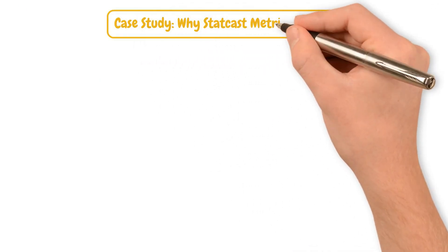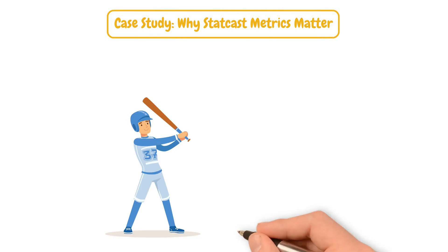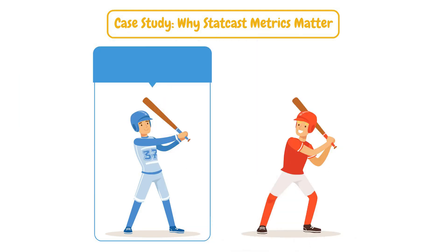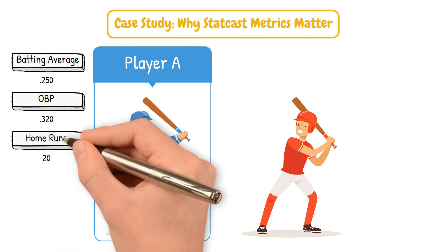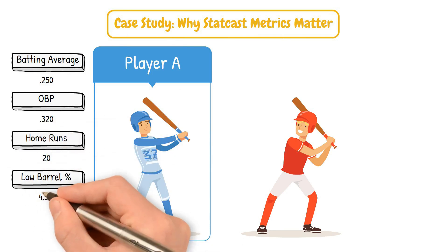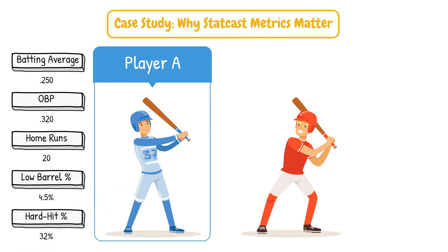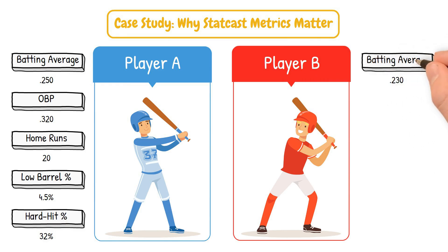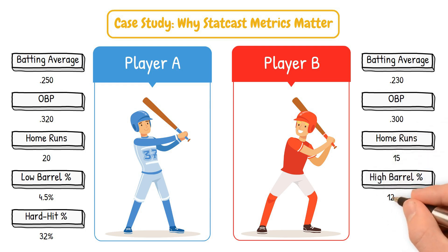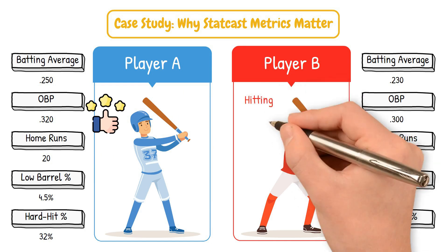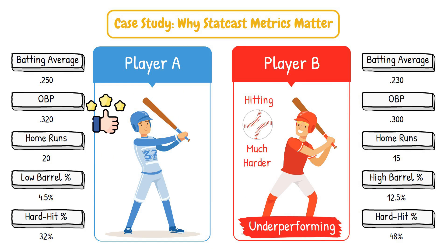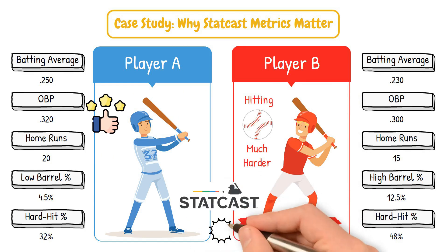To apply these metrics, let's compare two players. Player A has a .250 batting average, a .320 OBP, and 20 home runs, but a low barrel percentage of 4.5% and a hard hit percentage of 32%. Player B has a .230 batting average, a .300 OBP, and only 15 home runs — however, he has a high barrel percentage of around 12.5% and a hard hit percentage of 48%. At first glance Player A looks better, but Player B's StatCast data suggests they are hitting the ball much harder and could be underperforming.